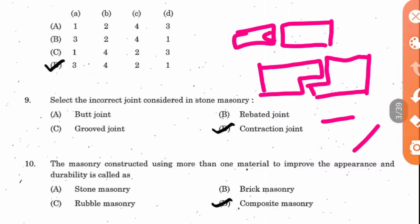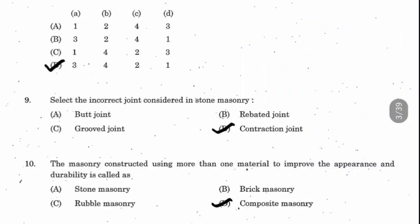Question 10: The masonry constructed using more than one material to improve appearance and durability is called what? Since it uses more than one material, the answer is composite masonry.